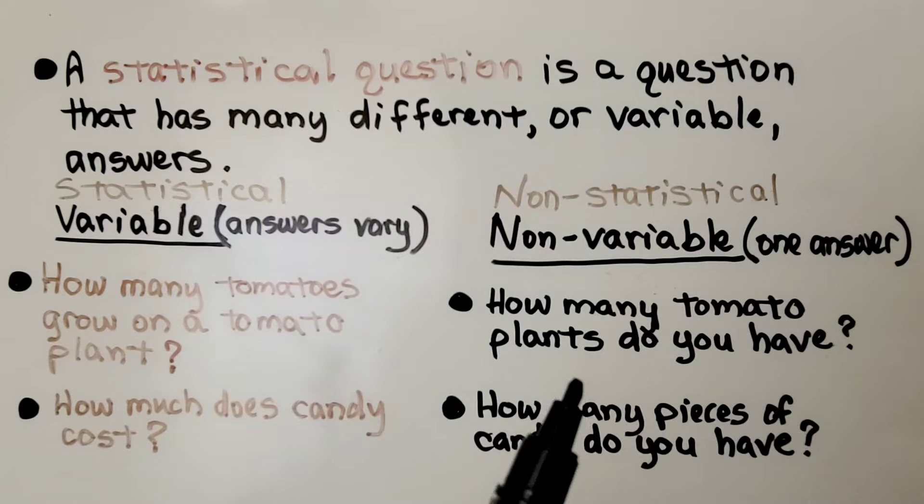For non-statistical, we'd have how many tomato plants do you have? Well, you know how many you would have. That's one answer. And how many pieces of candy do you have? You could count them. You could say the one answer of how many you have.